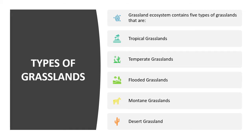Other types of grassland classification include flooded grasslands, mountain grasslands, and desert grasslands, along with the tropical and temperate grasslands already discussed. So grasslands can be classified into five categories: tropical, temperate, flooded, mountain, and desert grasslands. Let us try to figure out the characteristic features of each of them.